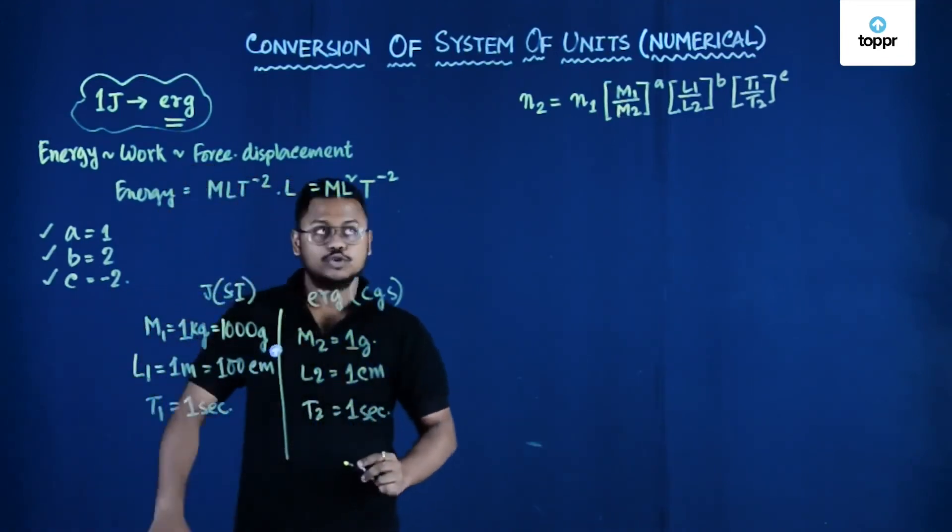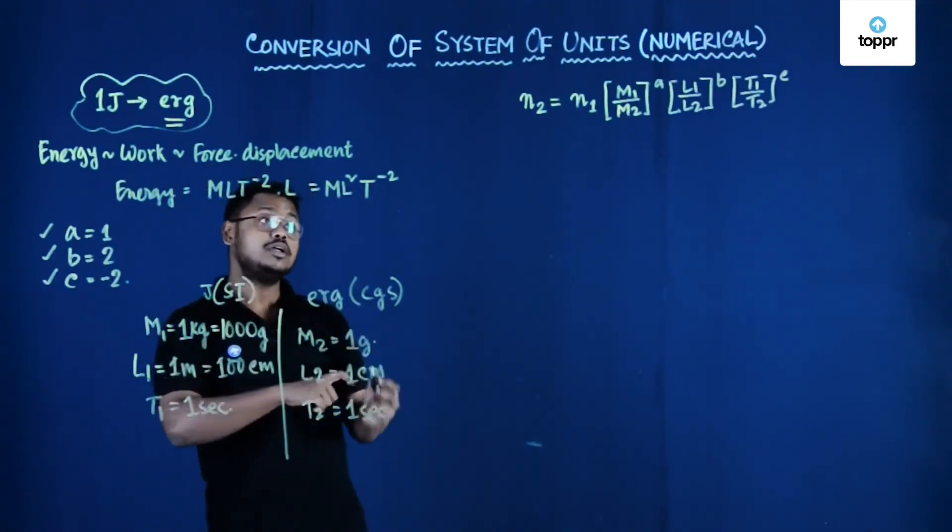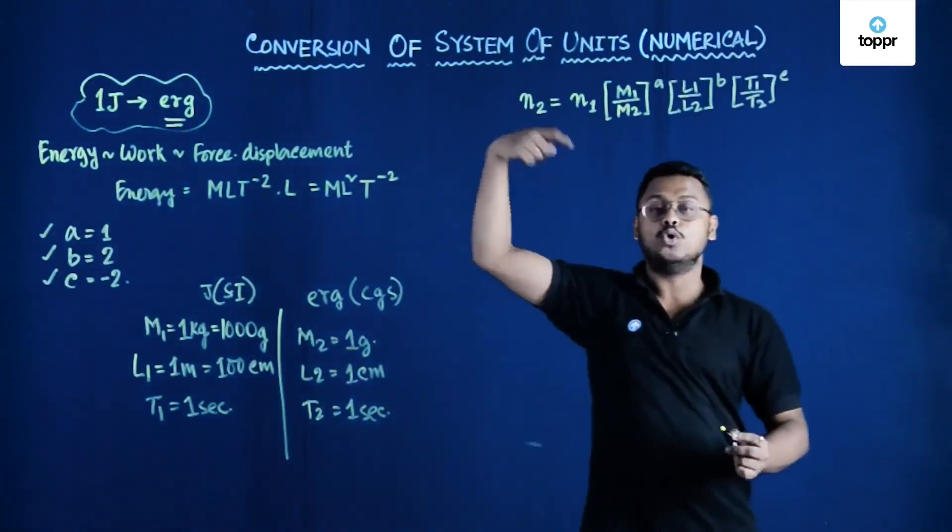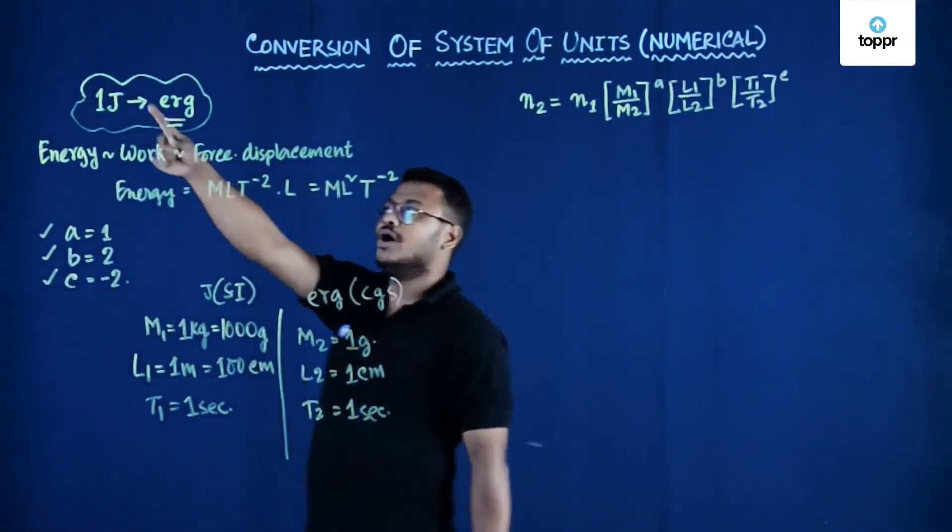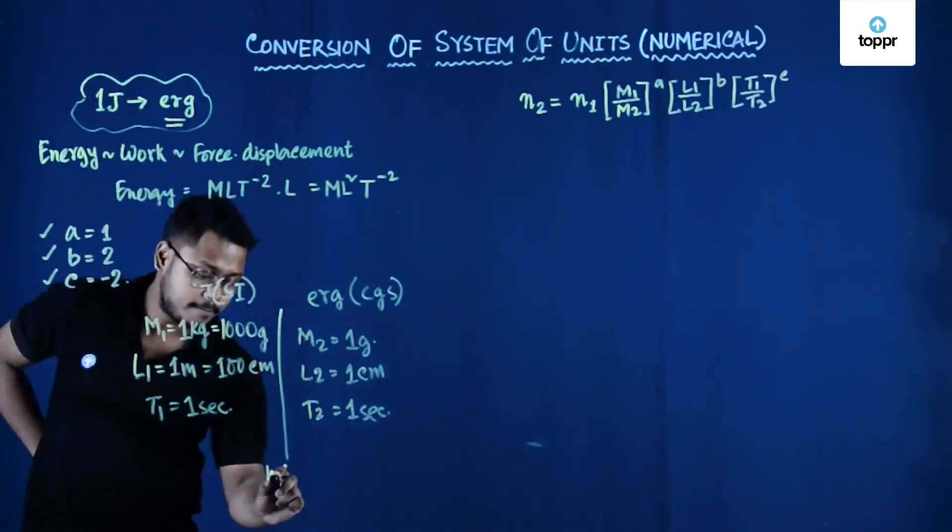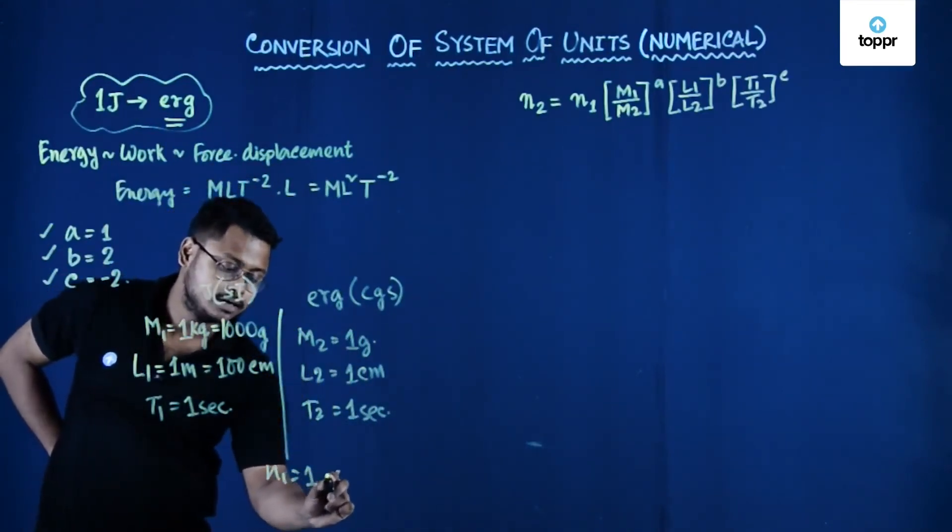So now you know all the values and what about the numerical value of this quantity in old system of unit, that is 1 joule. So n1 is 1.